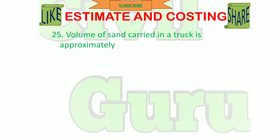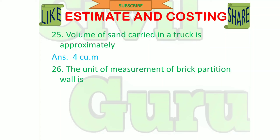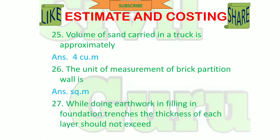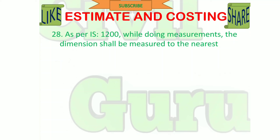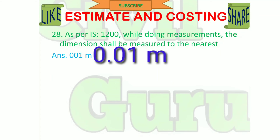Volume of sand carried in a truck is approximately 4 cubic meters. The unit of measurement of brick partition wall is square meters. While doing earthwork in filling in foundation trenches, the thickness of layer should not exceed 20 cm. As per IS 1200, while doing measurements, the dimensions shall be measured to the nearest 0.01 mm.